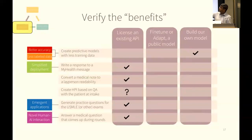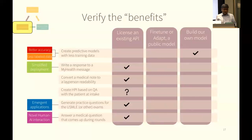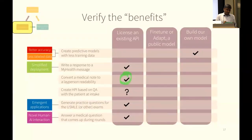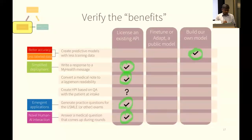To verify the benefits: in the upper left I have a triangle. Each row is one of the purported benefits, and each column is where you source your model — do you license an existing one, fine-tune or adapt a public one, or build a new one? All of the checkmarks are proofs that we have. Kurt's team has done this one; we're doing this in partnership with Epic; I just showed you an example with Eric and Matt Lundgren; I showed you the USMLE example. How, as a community, can we fill out this entire grid? What are the use cases on these axes that we should focus on? That's where the HIGH community should pay attention.